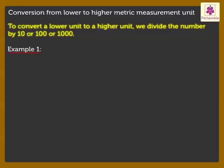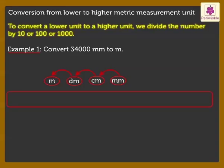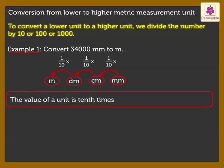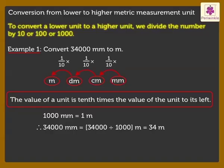Let us solve an example. Convert 34,000 millimetres to metres. Count the places to the left of millimetres up to metres. We have to move three places. We have already learnt that the value of a unit is 10 times the value of the unit to its left. As we moved three places to the left, the divisor is 1000. Therefore, on dividing 34,000 with the divisor 1000, we get the answer as 34 metres. Remember kids, here we move as many zeros from the lower unit as the number of places moved to get the answer.